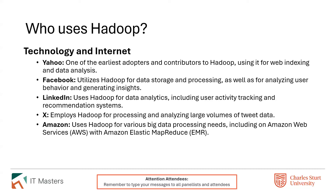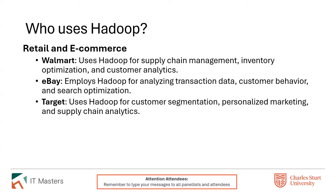In retail and e-commerce, Walmart uses Hadoop for supply chain management, inventory optimization, and customer analytics — supply chain management being very important given the unbelievable range of products they offer. eBay uses it for similar things: analyzing transaction data and customer behavior to better target customers, searching optimization, and helping customers find what they're looking for as quickly as possible.